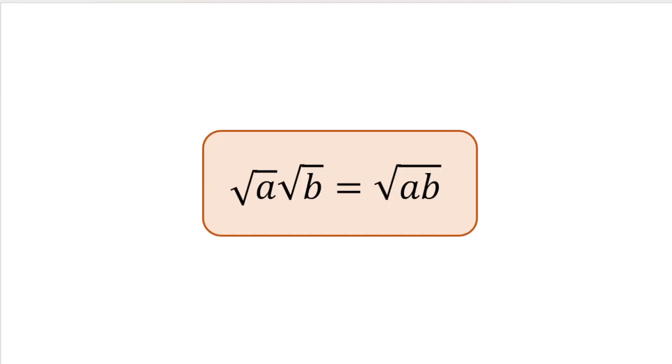In the last video we looked at how to add surds, so in this video we're going to look at how to multiply surds. Here is the general rule: if I have got root A times by root B, that's equal to the root of A times B.